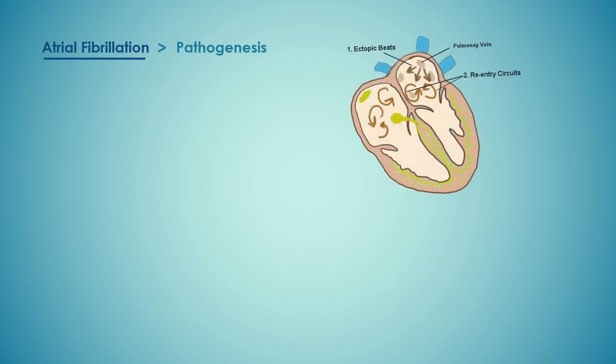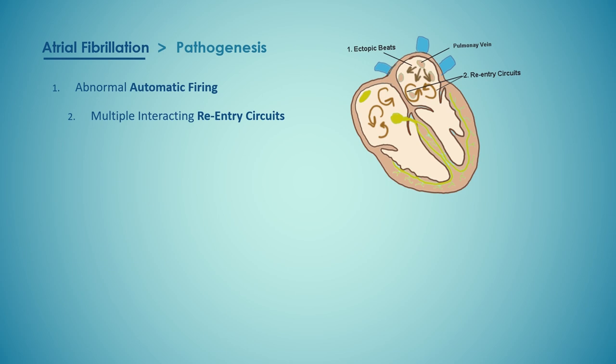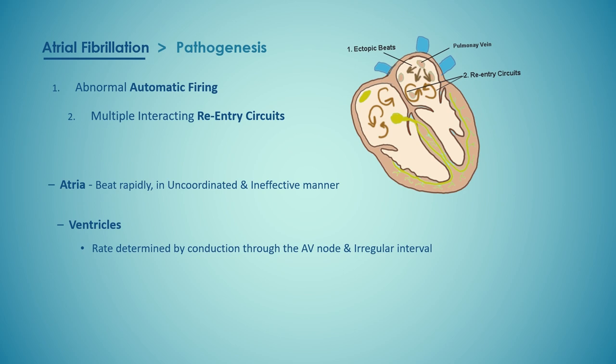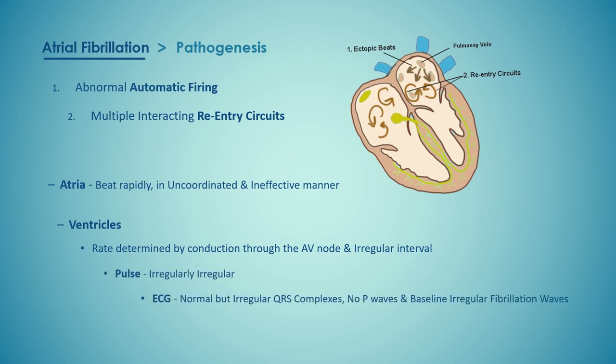Atrial fibrillation is a complex arrhythmia characterized by both abnormal automatic firing and the presence of multiple interacting re-entry circuits looping around the atria. Episodes of AF are initiated by rapid bursts of ectopic beats arising from the conduction tissue in the pulmonary veins or from diseased atrial tissue, and it becomes sustained because of re-entrant conduction within the atria or continuous ectopic firing. Re-entry is more likely to occur in atria that are enlarged or in which conduction is slow. During episodes of AF, the atria beat rapidly but in an uncoordinated and ineffective manner, and the ventricles are activated irregularly, producing the characteristic irregularly irregular pulse.